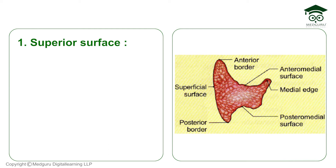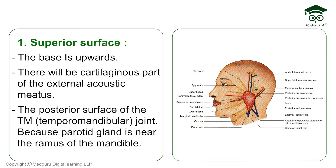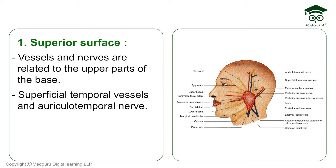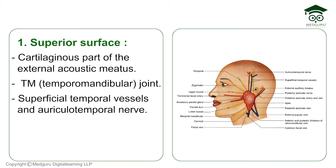The superior surface, or base, is directed upwards. It is related to the cartilaginous part of the external acoustic meatus and the posterior surface of the TM joint, since the gland is situated near the ramus of the mandible. The upper part of the base is also related to the superficial temporal vessels and the auriculotemporal nerve, as these structures travel toward the temporal region.